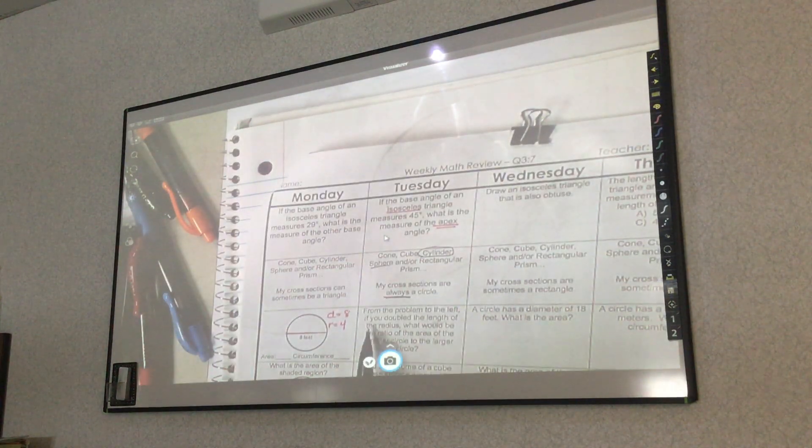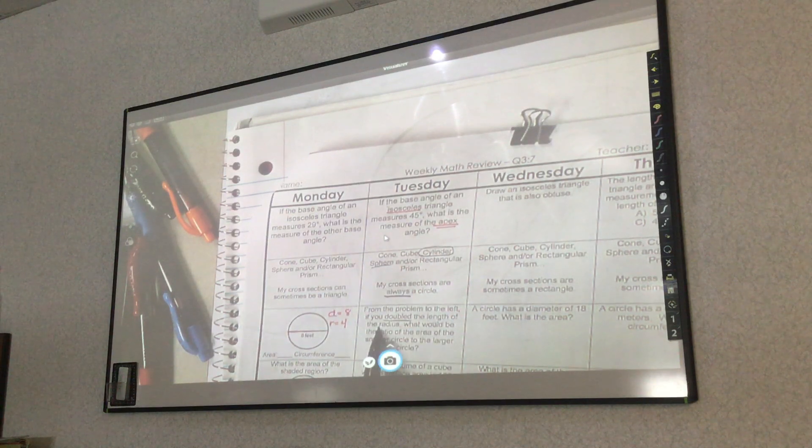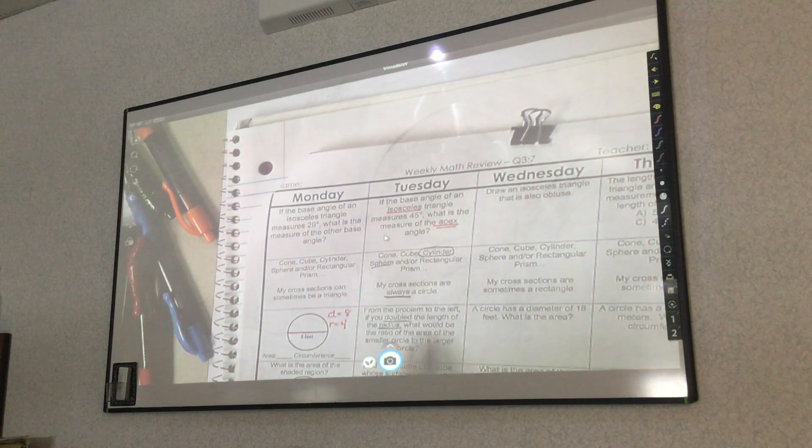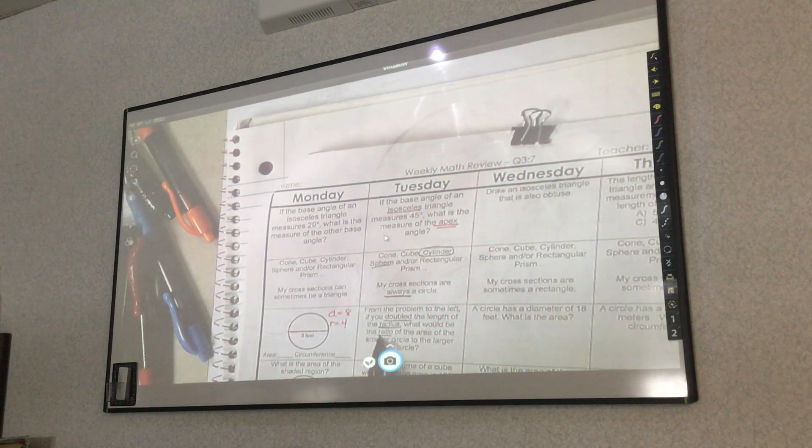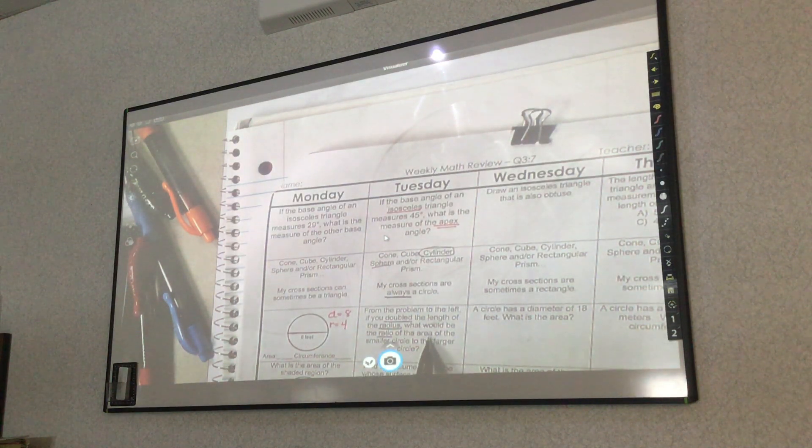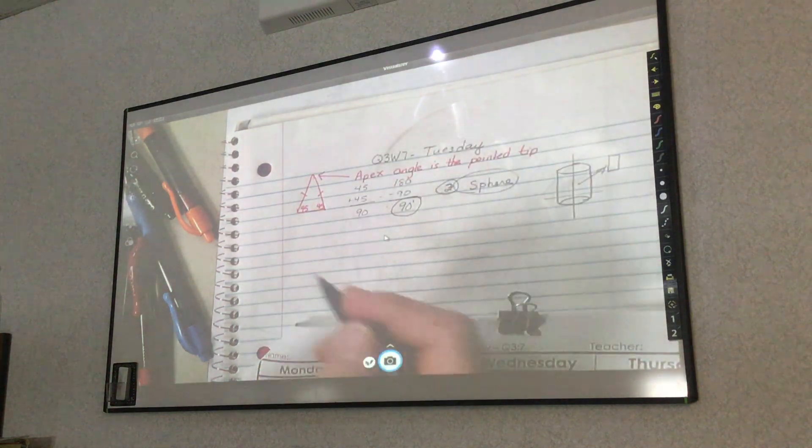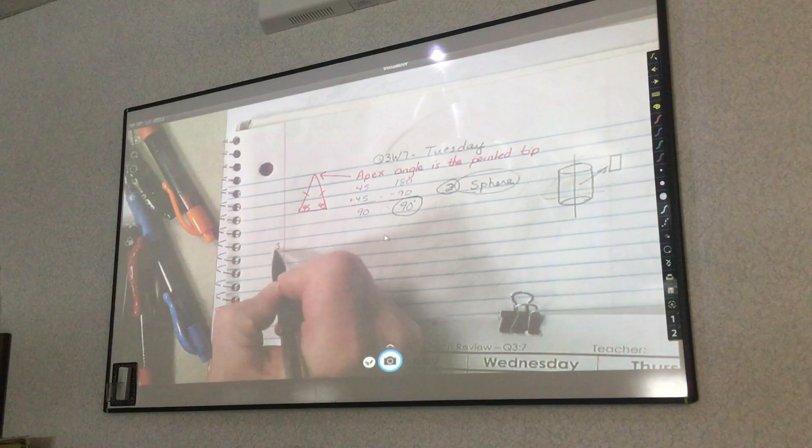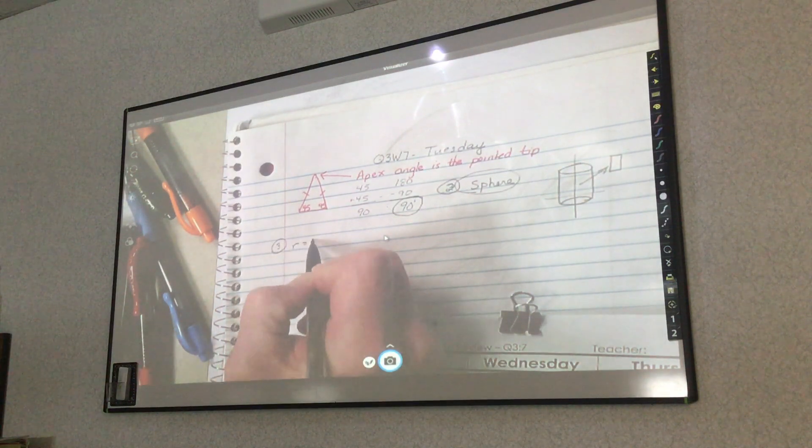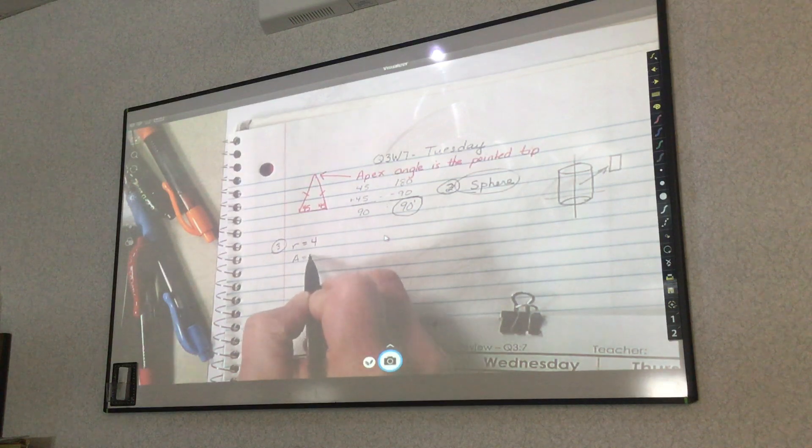From the problem to the left, if you doubled the length of the radius, what would be the ratio of the area of the smaller circle to the larger circle? All right, so right now, during yesterday, our radius was 4, and we found the area to be 16 pi.